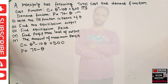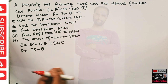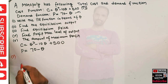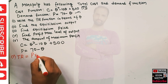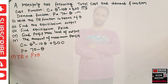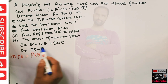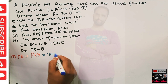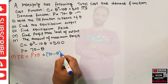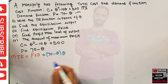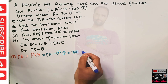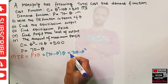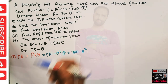First we are told to find the total revenue function. Total revenue is simply equal to price into quantity. Now p is 70 minus q, so we can write it as (70 minus q) multiplied by q, which gives us 70q minus q squared. This is our total revenue in terms of q.